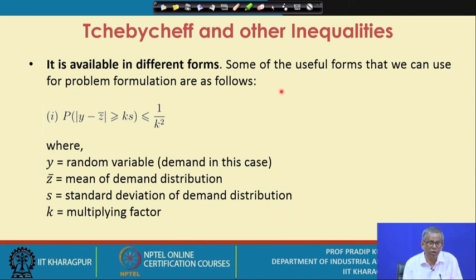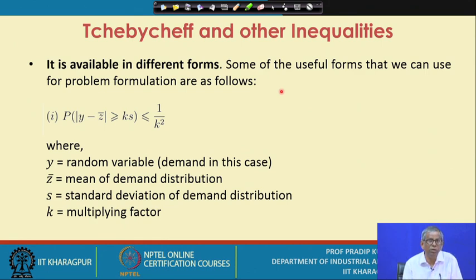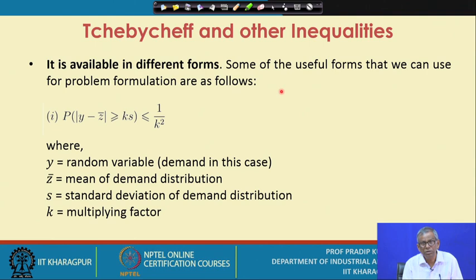There could be many reasons why you face uncertain situations. Whenever you try to formulate a real world problem, though we say there must be some assumptions related to the type of distribution, it is always stated that the true distribution is never known. What is known is some sort of assumptions related to the type of distributions under a given level of significance.